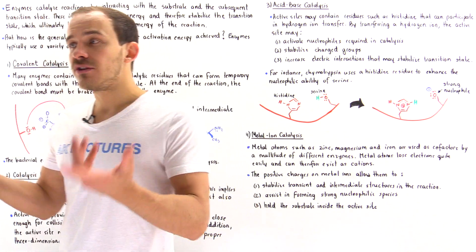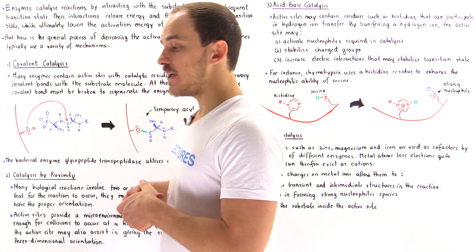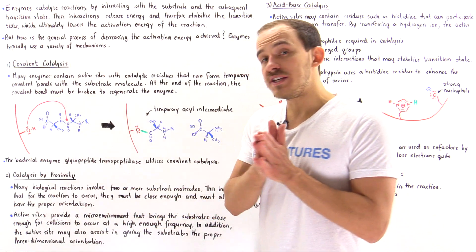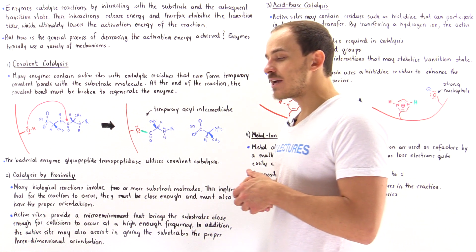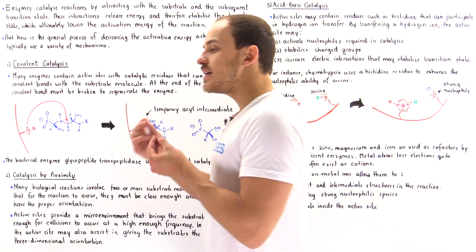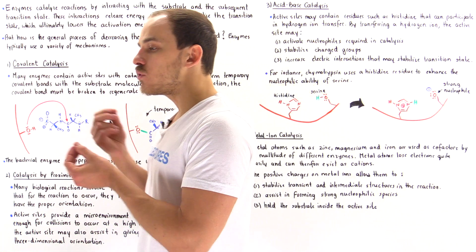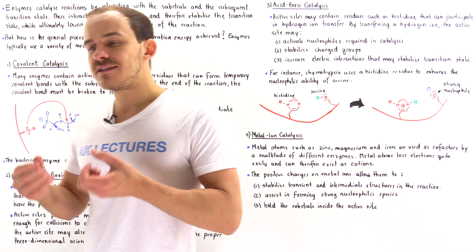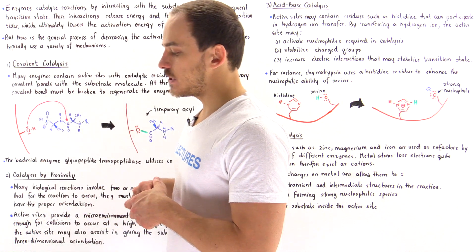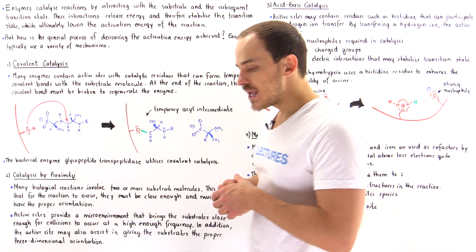And by lowering the activation energy, we speed up the rate of that particular reaction. So this is the general mechanism by which enzymes actually function.